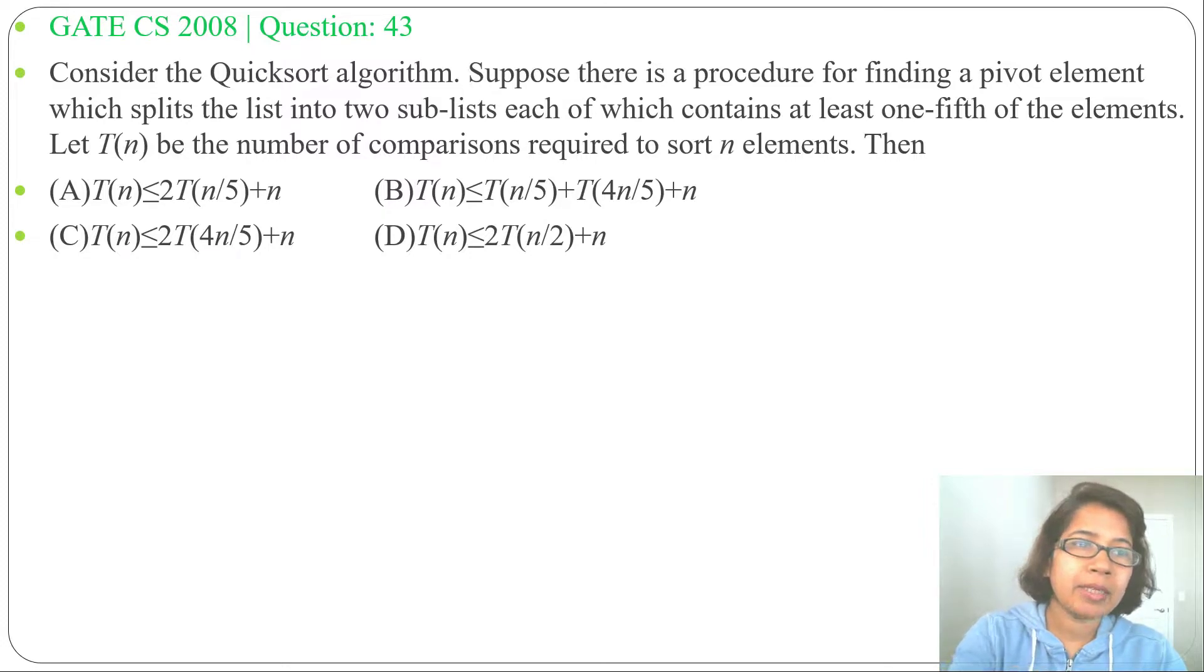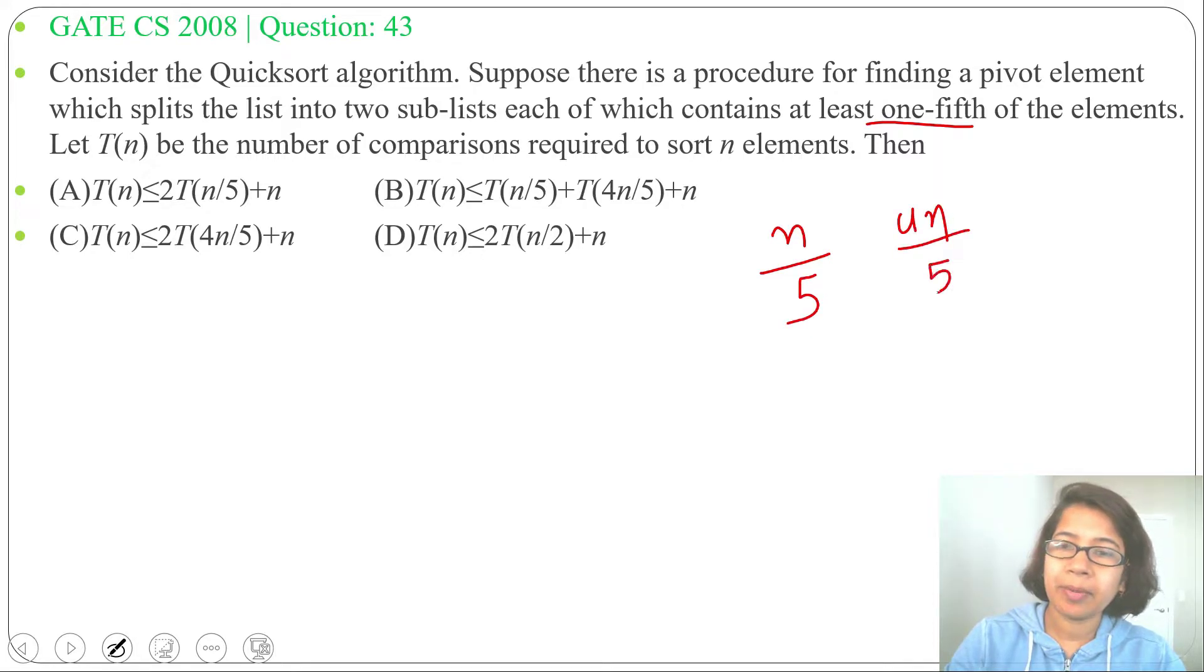The pivot element splits the list into two sublists which contain at least one-fifth of the elements. At least one-fifth of the elements means one side will be n by 5, other side will be 4n divided by 5. So, one side will be n divided by 5, other side will be 4n divided by 5.